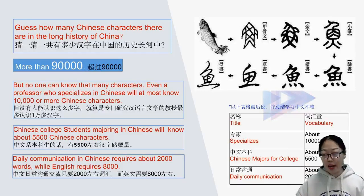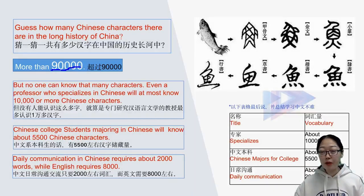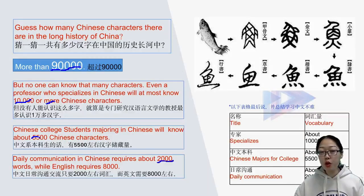Please guess how many Chinese characters there are in the long history of China. 10,000? 50,000? No — it's more than 90,000. But don't be afraid, because no one can know that many. Even a professor specializing in Chinese will know at most 10,000. Chinese college students majoring in Chinese know about 5,500 characters. For daily communication, it only requires about 2,000 words, whereas English requires 8,000.